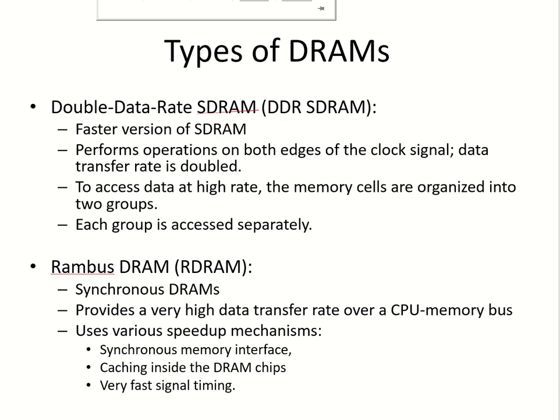Then we have the double data rate synchronous DRAM. This is a faster version of the synchronous DRAM because it can perform operations on both edges of the clock signal — that means the memory can be accessed at both the rising edge and the falling edge. So the data transfer rate is doubled in this manner.